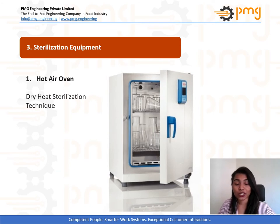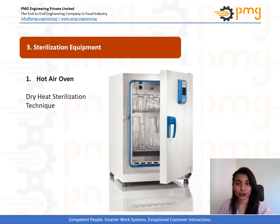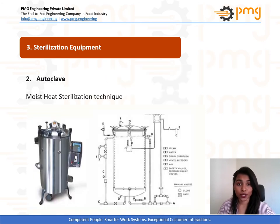Now that we have gone through the techniques and types of sterilization, let's look at what equipment is practically used. First is the hot air oven, an apt example of the dry heat sterilization process. It generally operates from 50 to 300 degrees Celsius and has a thermostat for controlling temperature. It uses hot dry air circulating around the instrument or surface to be sterilized and has a certain holding time.